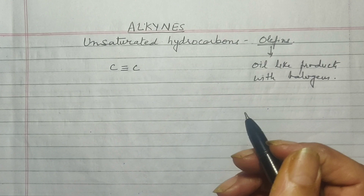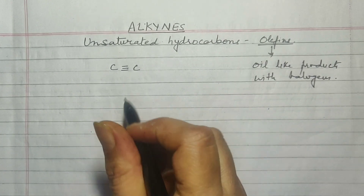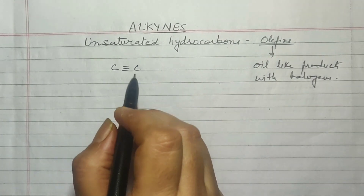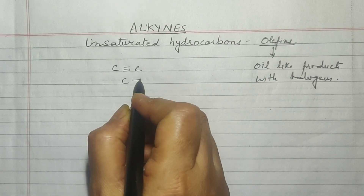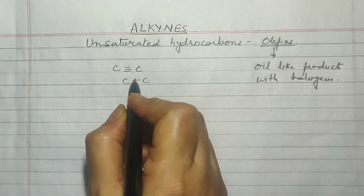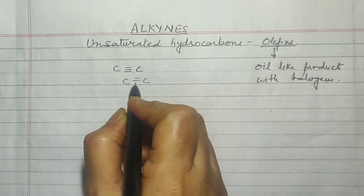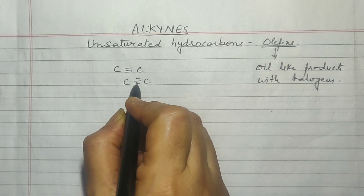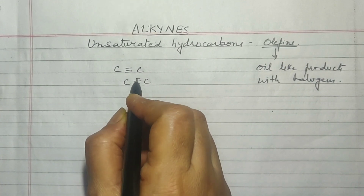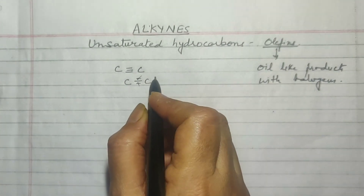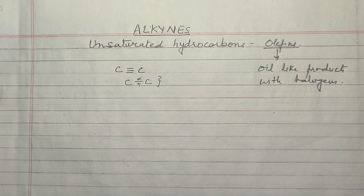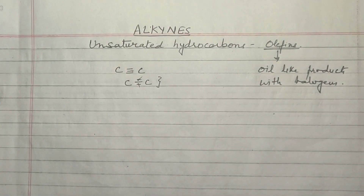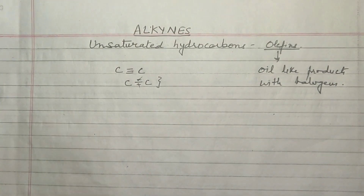Now as compared to Alkanes and Alkenes, Alkynes are the most reactive. This is because one bond between the carbon atoms is a strong one and the other two are weak ones. So the more weaker bonds in the molecule, the less stable the molecule will be, which makes all Alkynes very highly reactive.